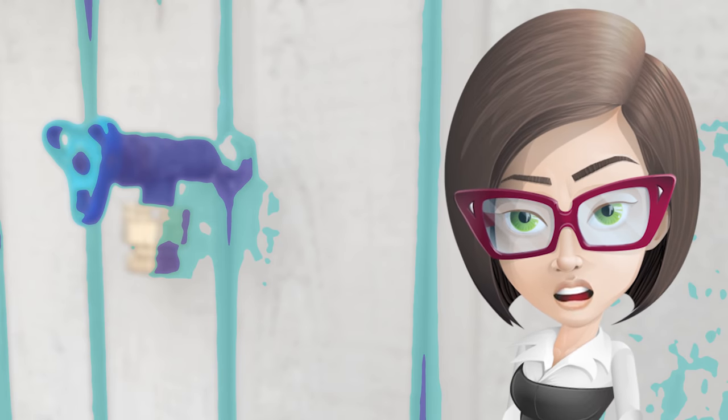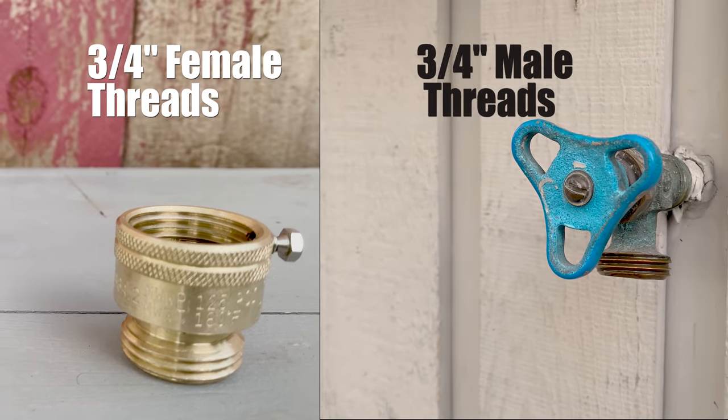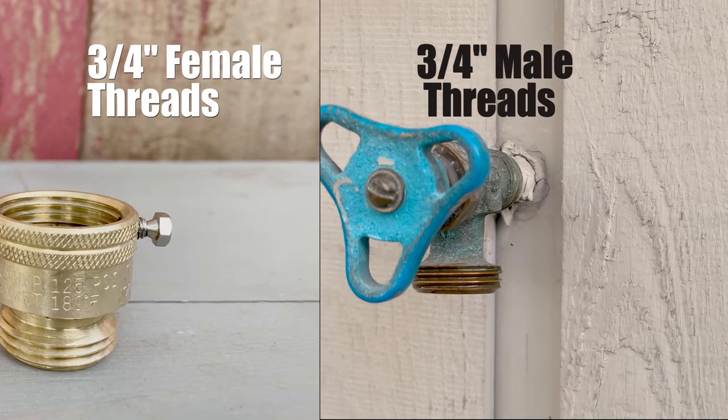Installing a vacuum breaker is very easy. Make sure the threads on the vacuum breaker match the threads on the hose bib.